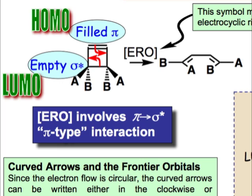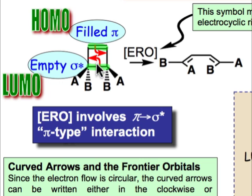Since there isn't an obvious starting point, we need to focus on something. One thing we could focus on is the fact that the reaction involves the breaking of a σ bond. Anytime a σ bond breaks, we think about electrons as being added to σ*, so the lowest unoccupied molecular orbital might be the σ* orbital. And if that's the case, where did the electrons come from? This arrow shows that the source of electrons must have been a π bond, so we'd have a π to σ* interaction — those are the frontier orbitals we're going to utilize.